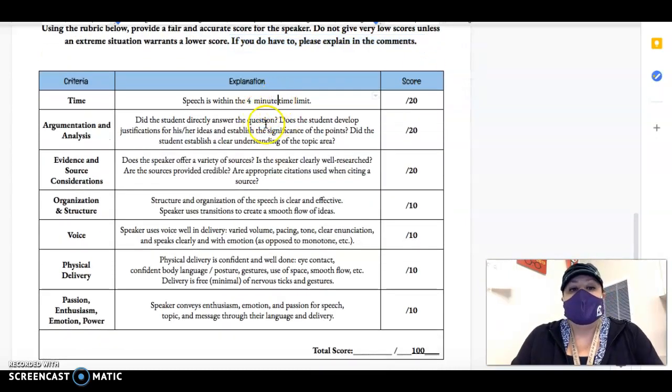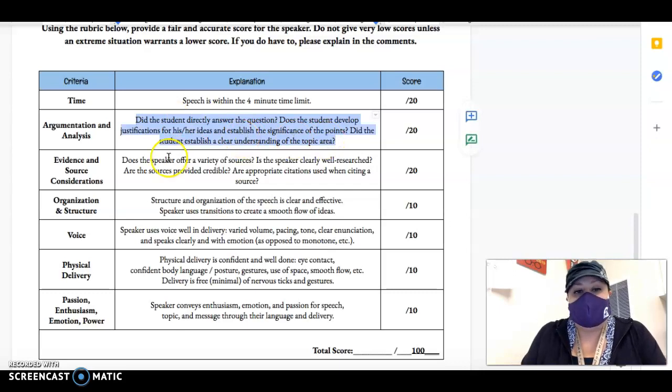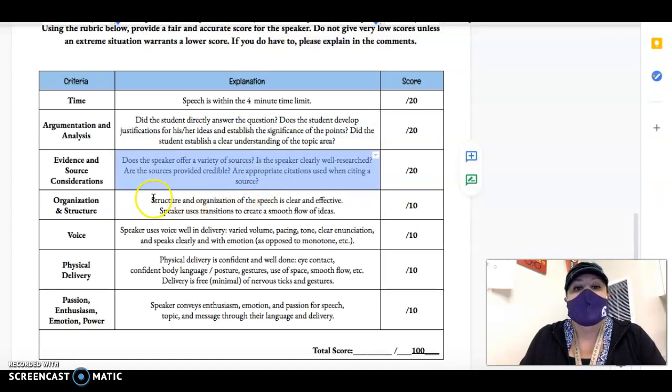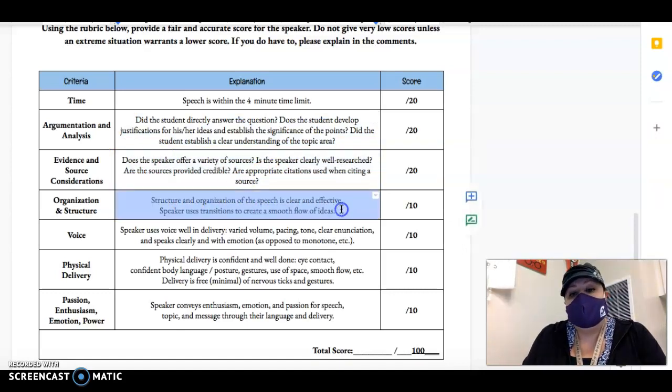So time we've already talked about. Remember that they are supposed to be arguing something so do they answer the question? Did they actually make it clear that they know what they're talking about? They should make sure they're using a variety of sources and making it clear that they have lots of them in their speech. They should try and make it as organized as possible but keep in mind they only have 20 minutes, so that's one of the challenges of extemporaneous.